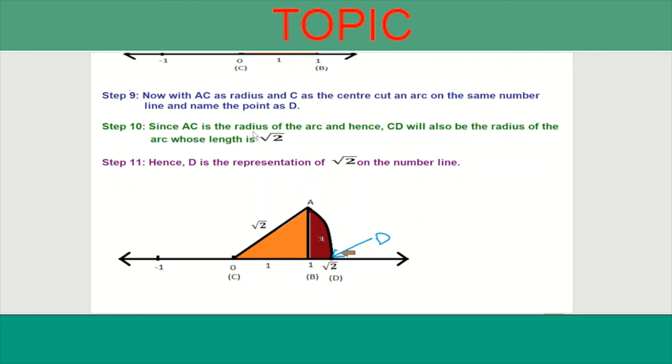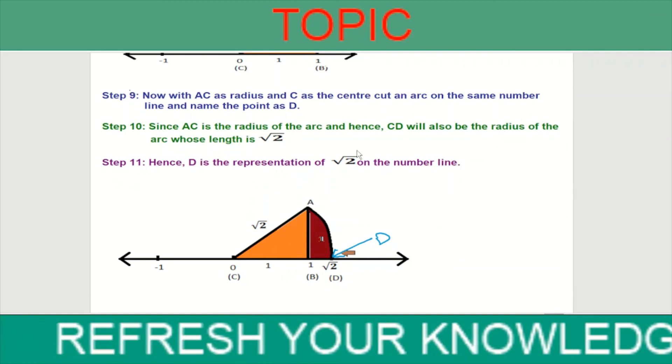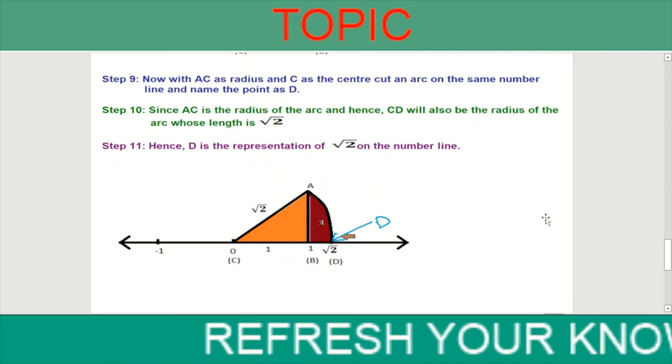Step 10: Since AC is the radius of the arc, CD will also be the radius of the arc whose length is root 2. Hence, D is the representation of root 2 on the number line.